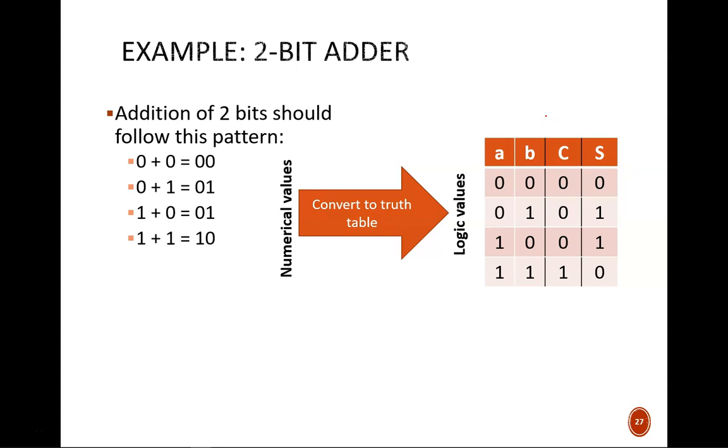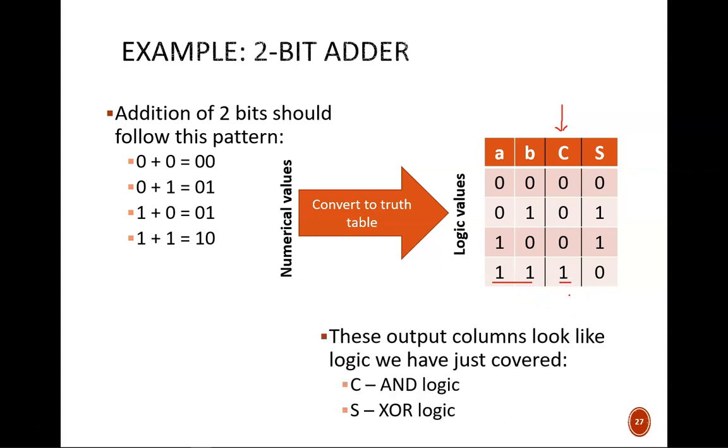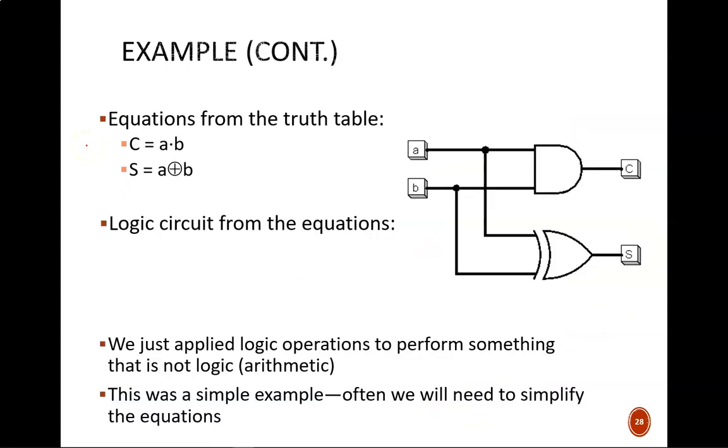Now let's pause for a second and see if anything rings a bell. What logic operation does the C column seem to reflect? It outputs true if all of the inputs are true. Ah, this is simply AND logic. And what about the S column? It is true when one and only one input is true. That sounds a lot like exclusive OR.